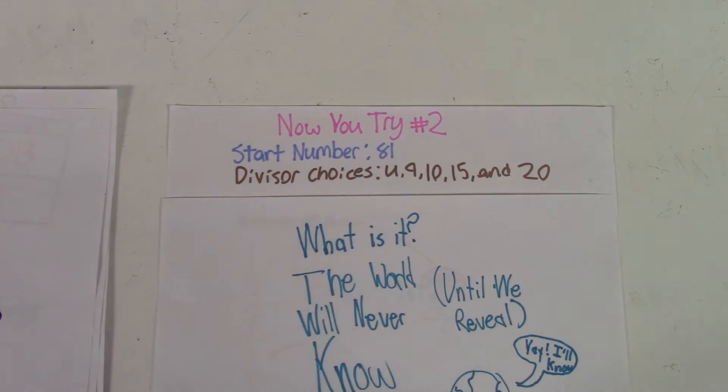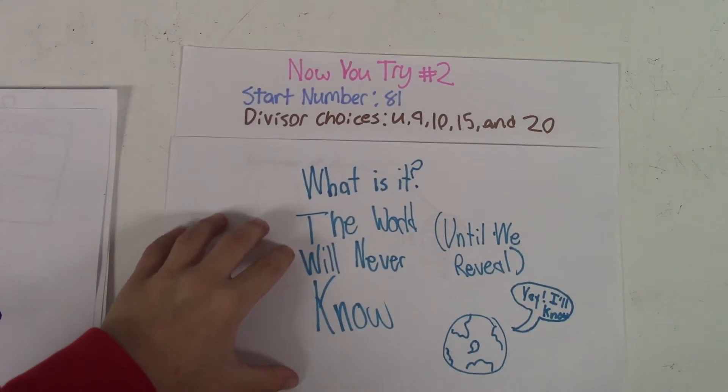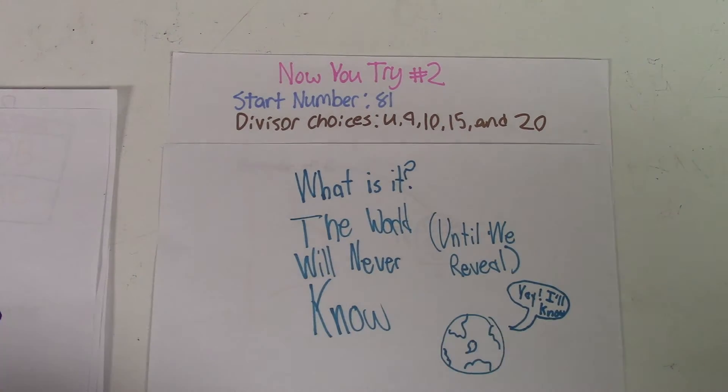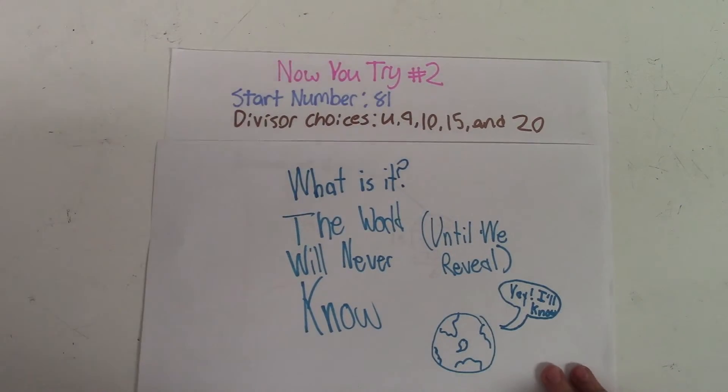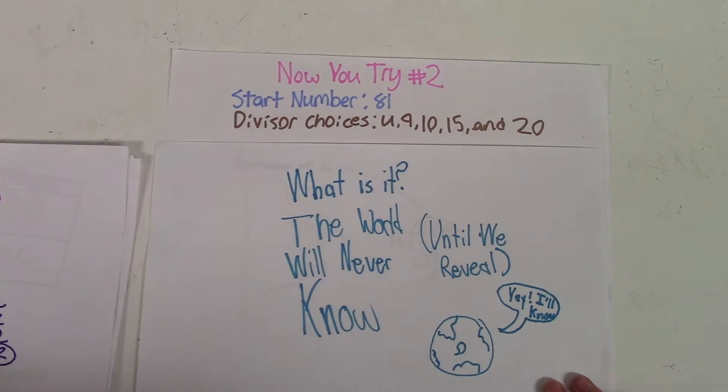This start number is 81. You have the divisor choices of 4, 9, 10, 15, and 20. You can pause the video, as he said, and try to figure out the answer.